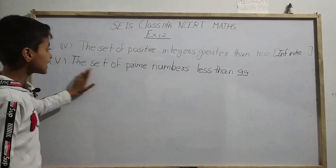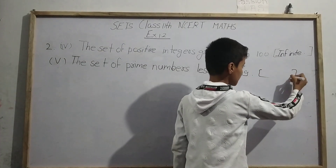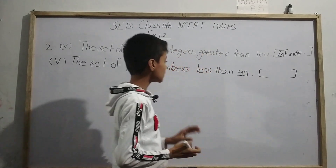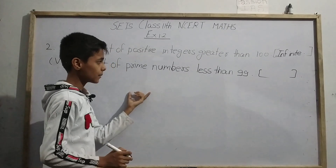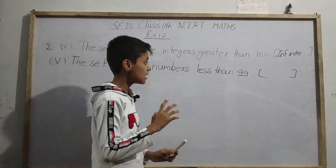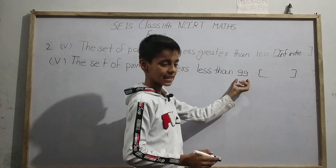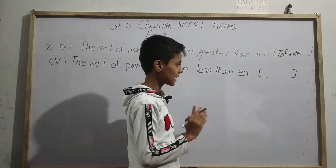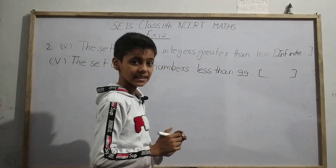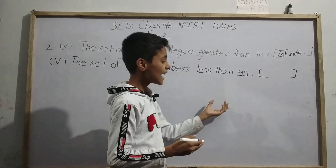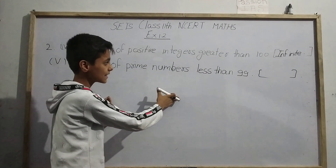For the fifth set, we can see here that this is the set of prime numbers less than 100. We have to tell whether it is an infinite set or a finite set. Here an end point is given, and we are looking only at prime numbers. What is the largest prime number less than 100? 99 is not a prime number, 98 is divisible by 2, but 97 — we can see that 97 is prime. So the elements go only up to 97.